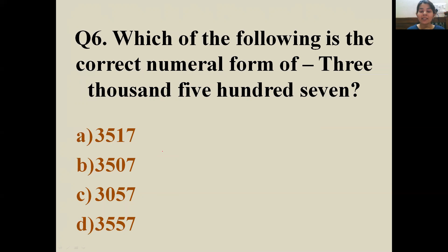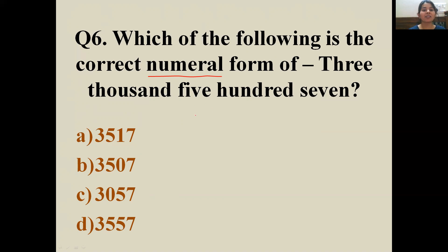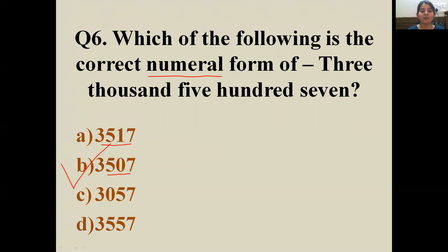Question number six: which of the following is the correct numeral form of three thousand five hundred seven? 'Numeral form' means in numbers. Checking each option — thousands place has 3, then 507. The first option shows 517 but we need 507, so the correct answer is B: 3507. Well done!